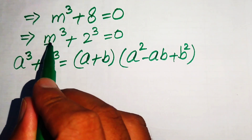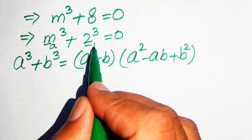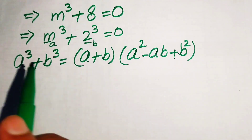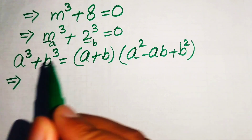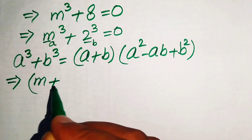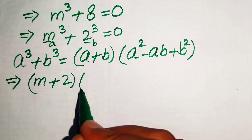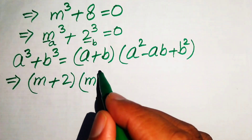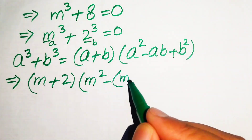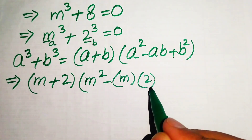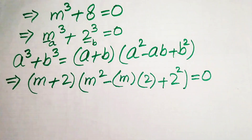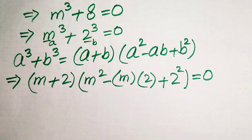In the above equation, the value of a is m and the value of b is 2. We substitute these two values into the formula. It becomes (a plus b), so that's (m plus 2), times (a squared minus ab), which is m squared minus m times 2, plus b squared, which is 2 squared.